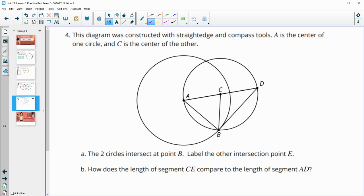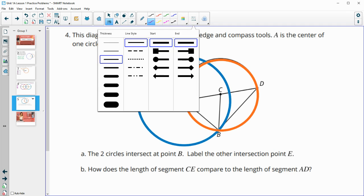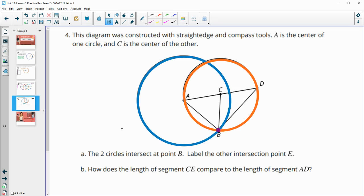Number four, this diagram was constructed with a straightedge and compass tools as well. A is the center of one circle. So let's get that circle. Here's circle A. And then we have another circle, which is centered at C. So the two circles here intersect at point B. So they're showing us point B here. Let's highlight that. Label the other intersection as E. So let me label this one as E. An intersection is where the two circles cross.